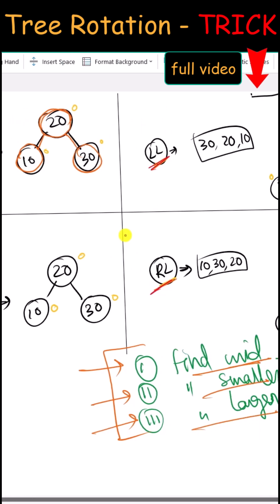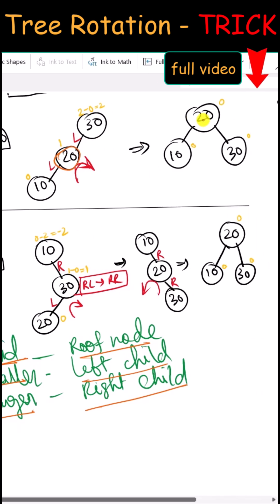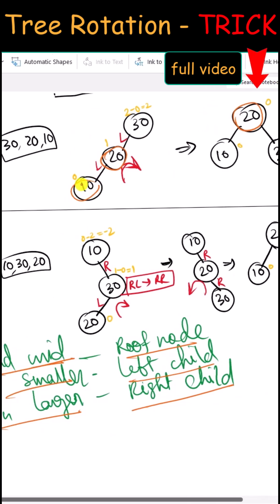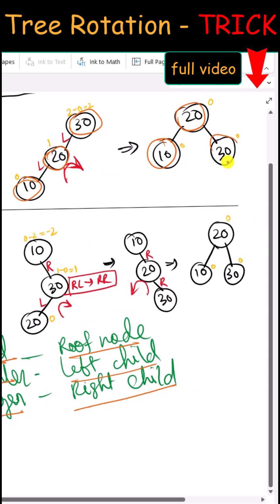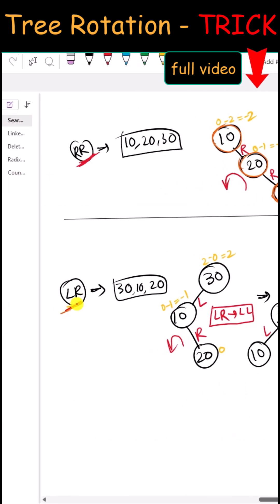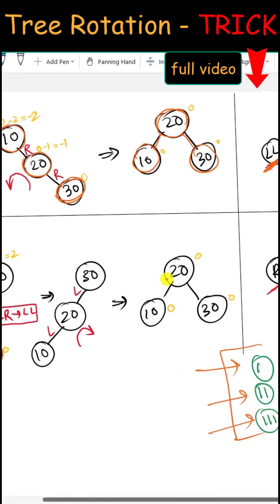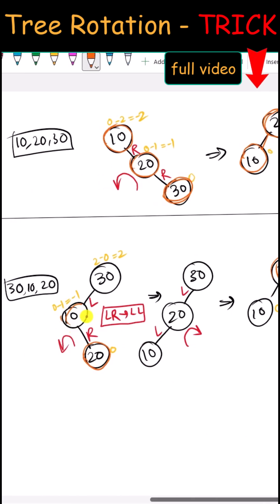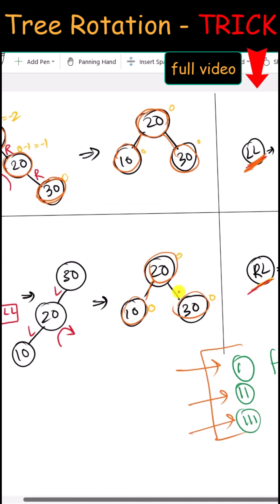We can apply this to any of the rotations. In the case of left-left rotation, find the mid — that will be the root, the smaller one will be the left child, and the larger one will be the right child. This is also applicable in the case of left-right rotation: find the median of the three numbers — that will be the root, the smaller one will be the left child, and the larger one will be the right child.